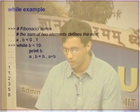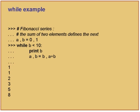Here is a while loop that actually computes the Fibonacci sequence. A while loop is basically written as: while condition, block. So, while b is less than 10, print b; then a comma b equals b comma a plus b.